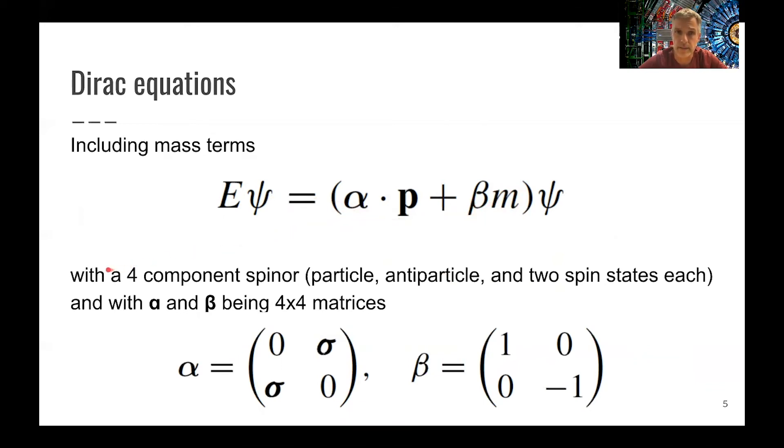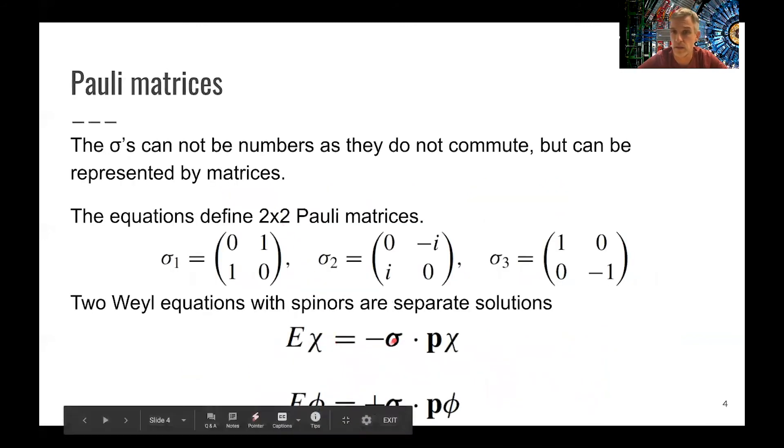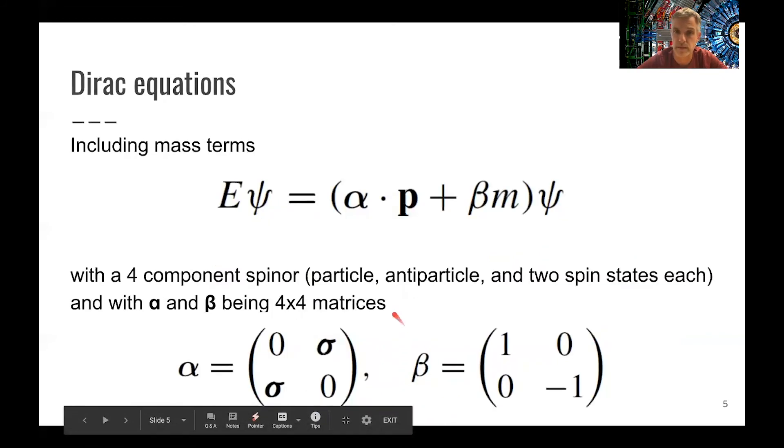But we can rewrite this equation and introduce this mass term here again with the coefficient. And we find now this phi here is a four-component spinor. And it stands for the particle, its antiparticle, and the two spin states. So that's combining those two equations we had here. You will see one is for particles and one is for antiparticles for the two spin states. So we combine this in one equation and we add it with mass term.